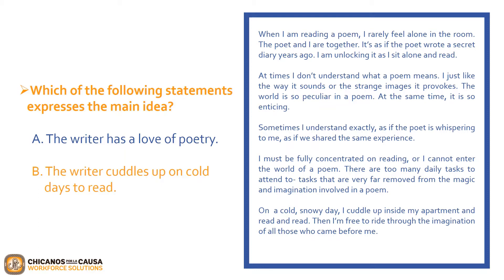We can see evidence of this in a couple of different sentences throughout the entire passage. For example: 'At times I don't understand what a poem means. I just like the way it sounds or the strange images it provokes. The world is so peculiar in a poem. At the same time, it is so enticing.' From this statement, we understand that the writer loves poetry so much that they don't even have to understand what the poem is about in order to enjoy it. We find further evidence in the second to last paragraph: 'There are too many daily tasks to attend to — tasks that are very far removed from the magic and imagination involved in a poem.' While the writer does mention enjoying cuddling up to read on cold snowy days, this statement is made only once and is not the central message or main idea of the overall written piece.